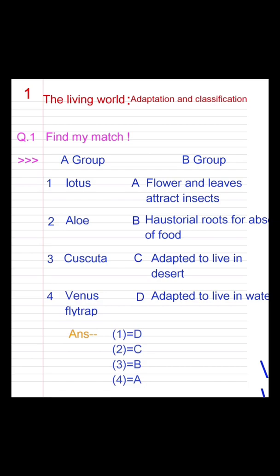Find My Match. Group A: First - Lotus, Second - Aloe, Third - Cuscuta, Fourth - Venus Fly Trap. Group B: A. Flower and leaves attract insects. B. Haustorial roots for absorbing food. C. Adapted to live in desert. D. Adapted to live in water.